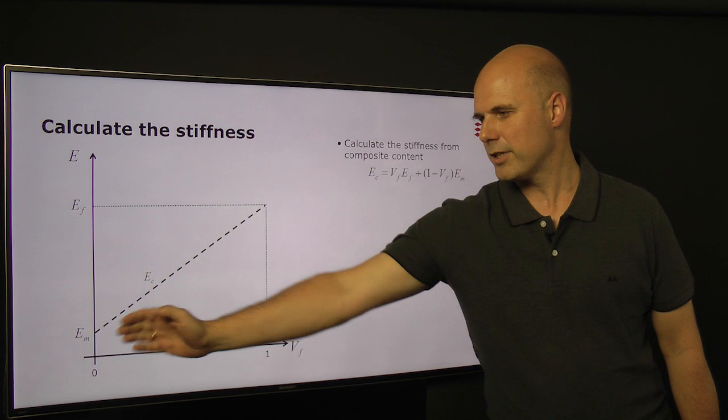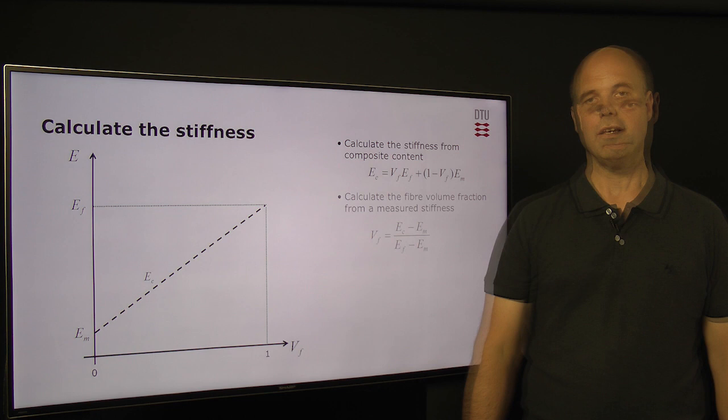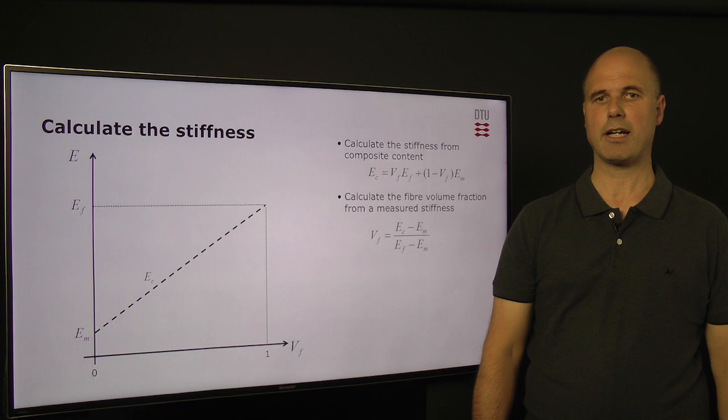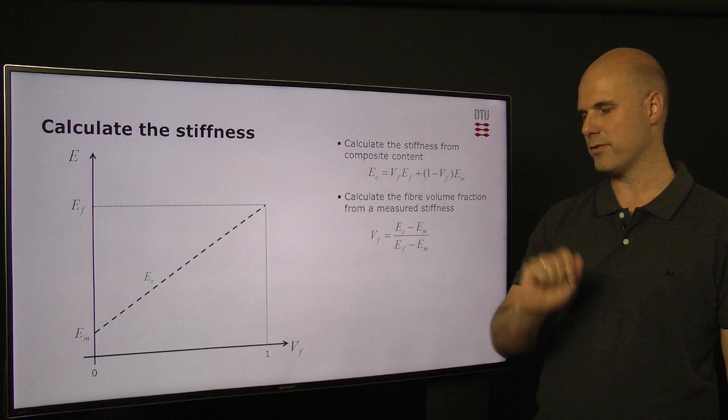Plotting the stiffness of the composite as a function of volume fraction, we can see that the stiffness is a linear relation going from the matrix stiffness with no fibers up to the fiber stiffness for only fibers. If instead of knowing the volume fraction we have a measured composite stiffness, we can calculate the volume fraction of the fiber using the rearranged rule of mixture, using the stiffness of the composite, matrix, and fiber.